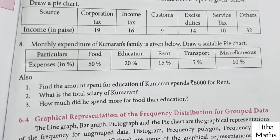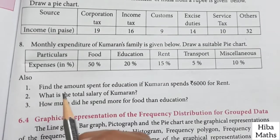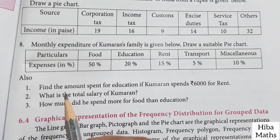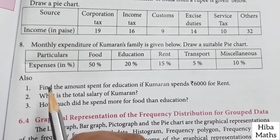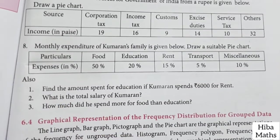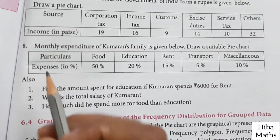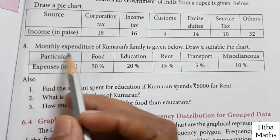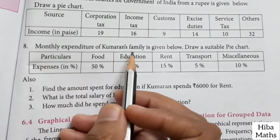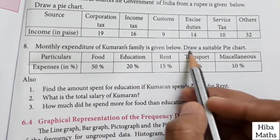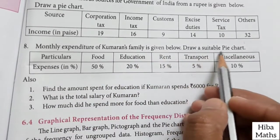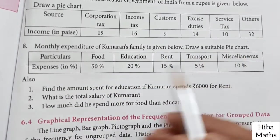Hello students, welcome to Hibamax. 8th Standard Maths Exercise 6.1. The monthly expenditure of Kumarin's family is given below. Draw a suitable pie chart.